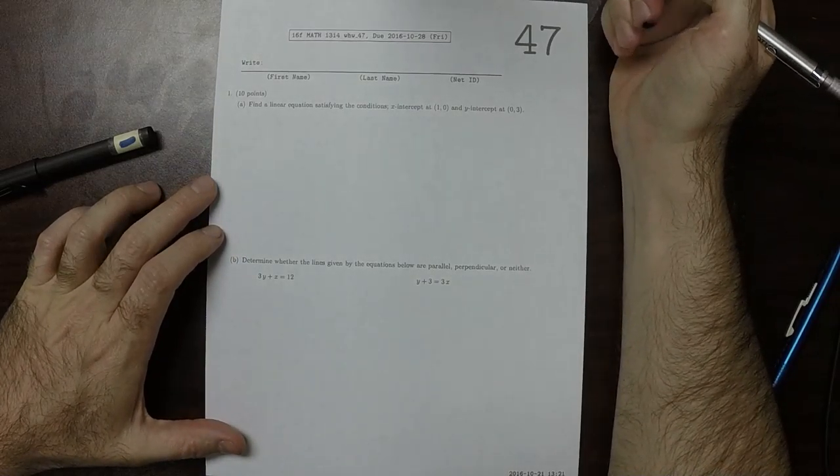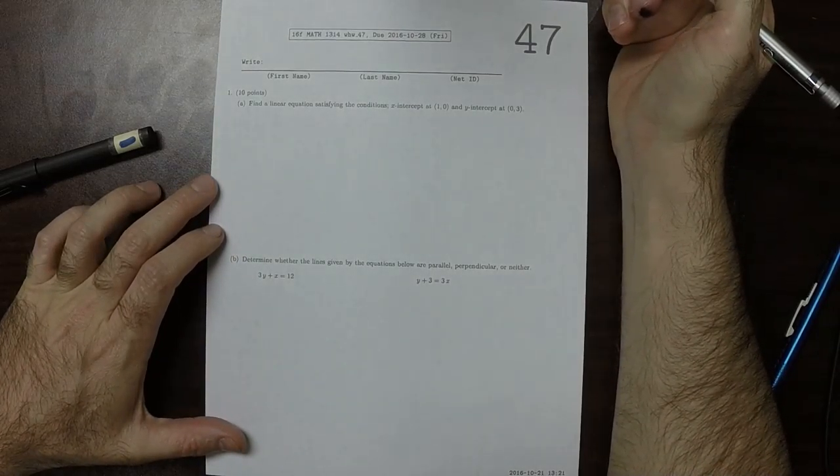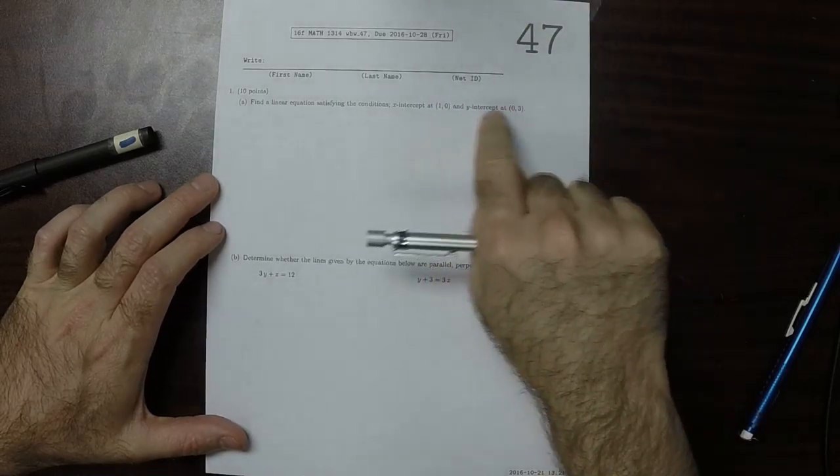This is the solution to written homework 47: find a linear equation. We're given two points.